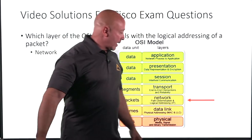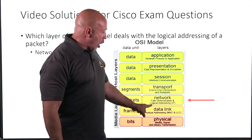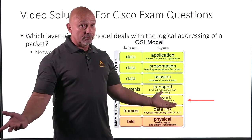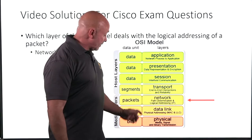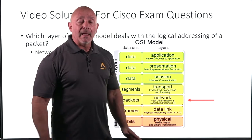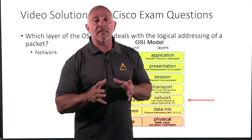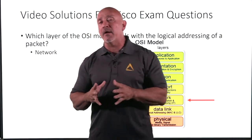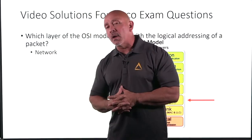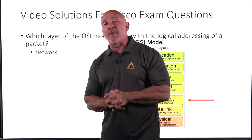The network layer. Logical addressing — pretty straightforward. Anything that deals with packets is in Layer 3, or the network layer of the OSI model.